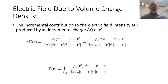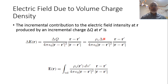Assuming we are talking about an incremental charge in a volume charge density, the electric field due to an incremental charge located at the source point r′ at the observation point r can be found using Coulomb's law for a point charge. We write ΔE as ΔQ over 4πε₀ times |r − r′|² multiplied by the unit vector in the direction of r − r′, where ΔQ equals ρv ΔV.